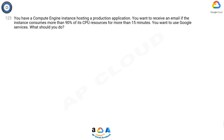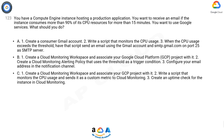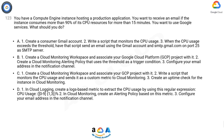Question 123: You have a Compute Engine instance hosting a production application. You want to receive an email if the instance consumes more than 90% of its CPU resources for more than 15 minutes. You want to use Google services. Option A: 1) Create a consumer Gmail account. 2) Write a script that monitors the CPU usage. 3) When the CPU usage exceeds the threshold, have that script send an email using the Gmail account and smtp.gmail.com on port 25 as the SMTP server.